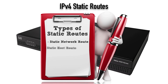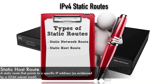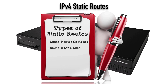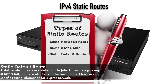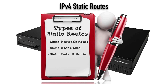Another type is a static host route, which is very similar to a static network route but instead of specifying a network, we specify a single host using an IP address with a 32-bit subnet mask. Something else that's very powerful is a static default route. Maybe a branch office router only has one way to get out to the internet or back to headquarters. Instead of running a dynamic routing protocol, we can enter a static default route — sometimes called a gateway of last resort — saying if this network address is not local, go here.